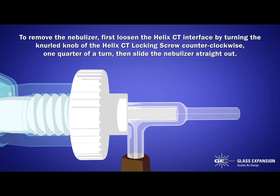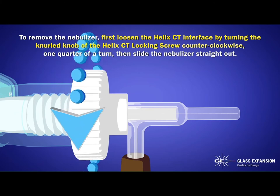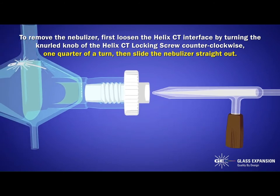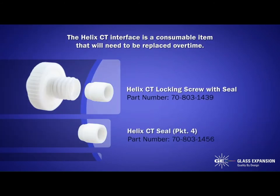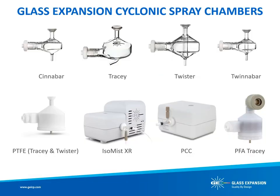To remove the nebulizer, first loosen the Helix CT interface by turning the knurled knob of the Helix CT locking screw counterclockwise one quarter of a turn, then slide the nebulizer straight out. The Helix CT interface is a consumable item that will need to be replaced over time. Now that we have detailed the unique features of Glass Expansion spray chambers, let's move on to the spray chamber selection guide.